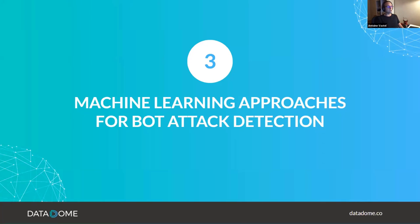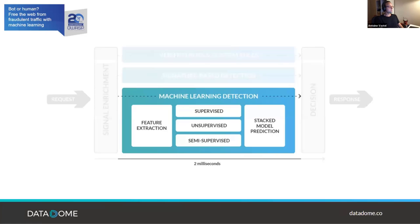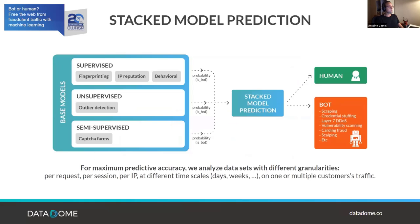DataDome's detection engine leverages a wide range of machine learning approaches. The philosophy is to use many models, each responsible for a particular task. We use supervised learning to analyze fingerprint consistency and determine IP reputation, unsupervised learning for outlier detection on website traffic to detect anomalies, and semi-supervised learning to detect CAPTCHA farms. The output of all these models is combined using model stacking to make a final decision on whether to allow or block traffic.